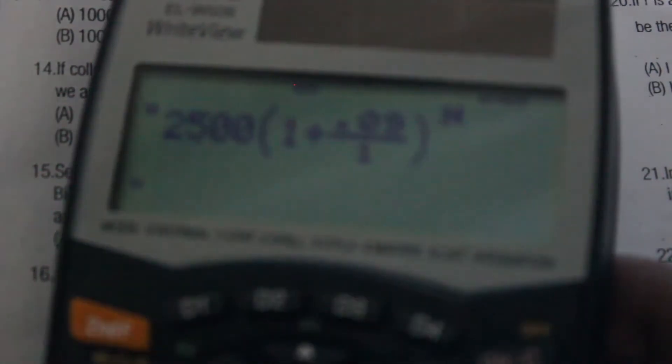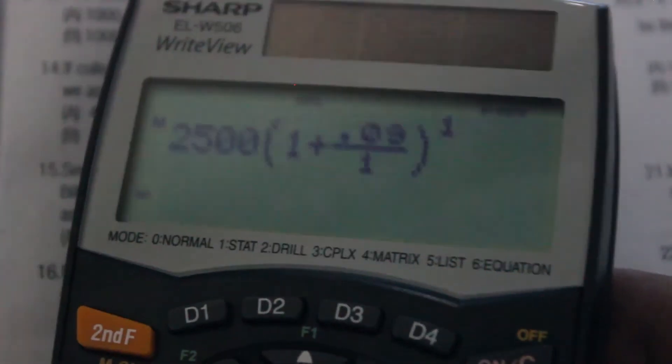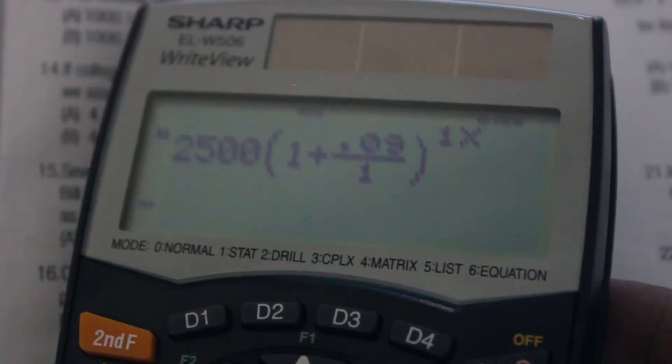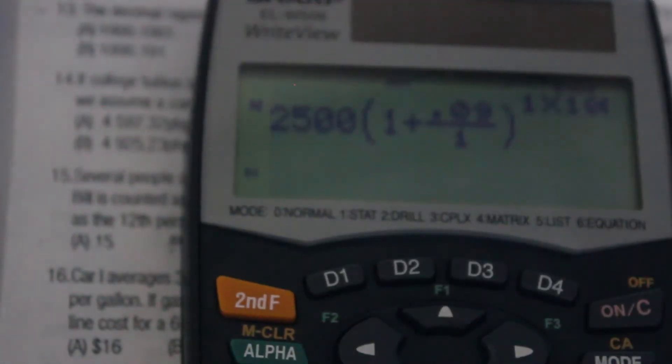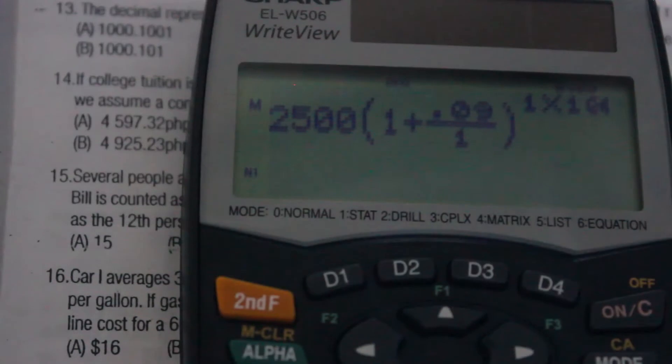Going back to the formula, we have n*t, so 1 times 10. So that's the formula: 2,500 that's our principal, the 1 plus 0.09 that's our r, over n that's 1 again, then raised to 1 times 10. Let's press the equal.